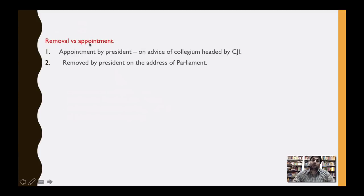Comparing removal versus appointment: appointment of judges is made by the President. For the appointment of the Chief Justice of India, the President can take advice of High Court or Supreme Court judges, but for appointment of judges other than the Chief Justice of India, the President must take advice of a collegium headed by the Chief Justice of India. Similarly, for removal of judges, the President signs an order after the motion is passed in both houses of Parliament and addressed to the President, after which the judge stands removed.